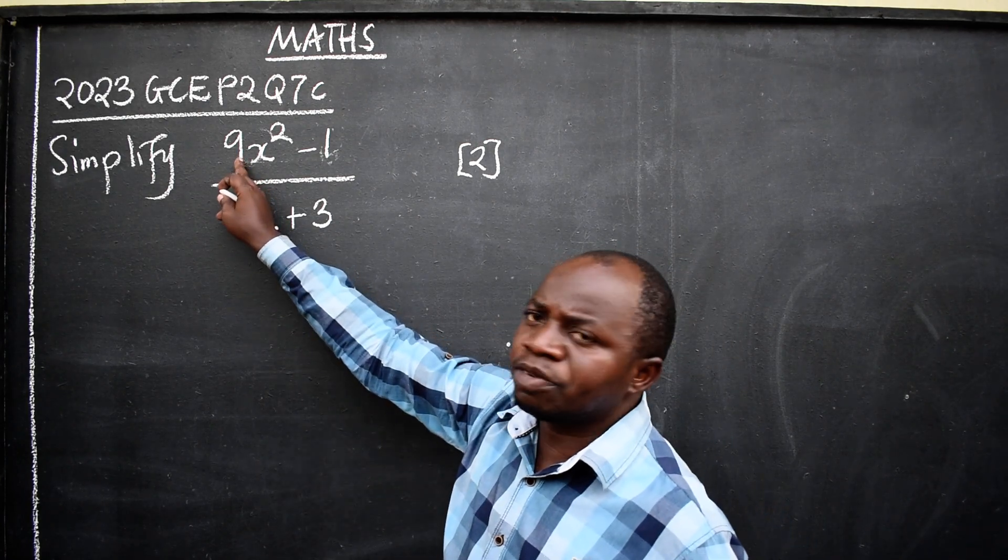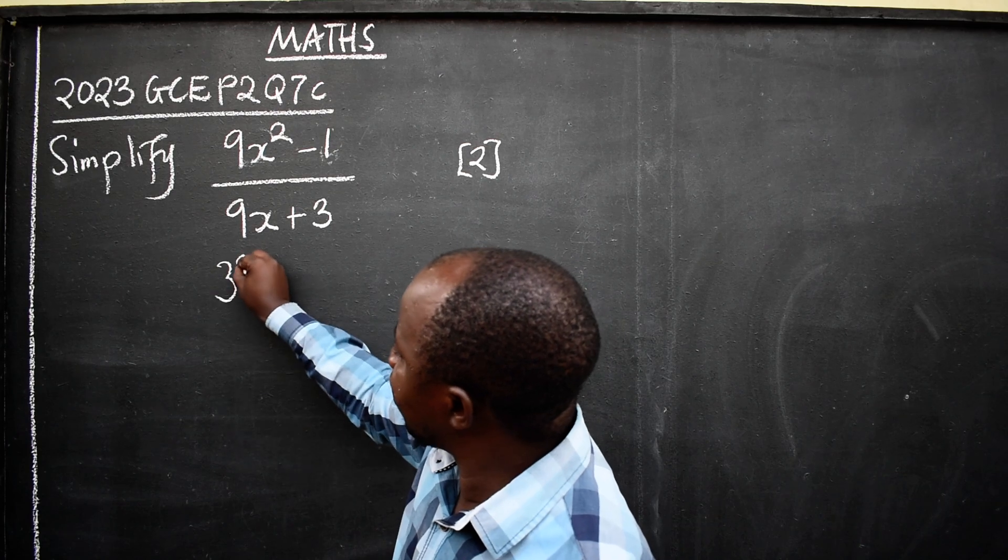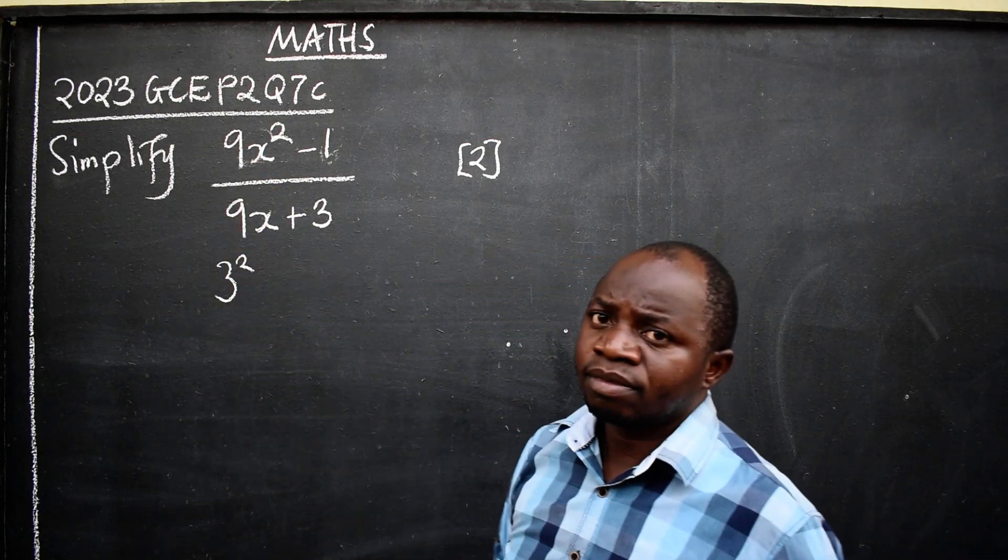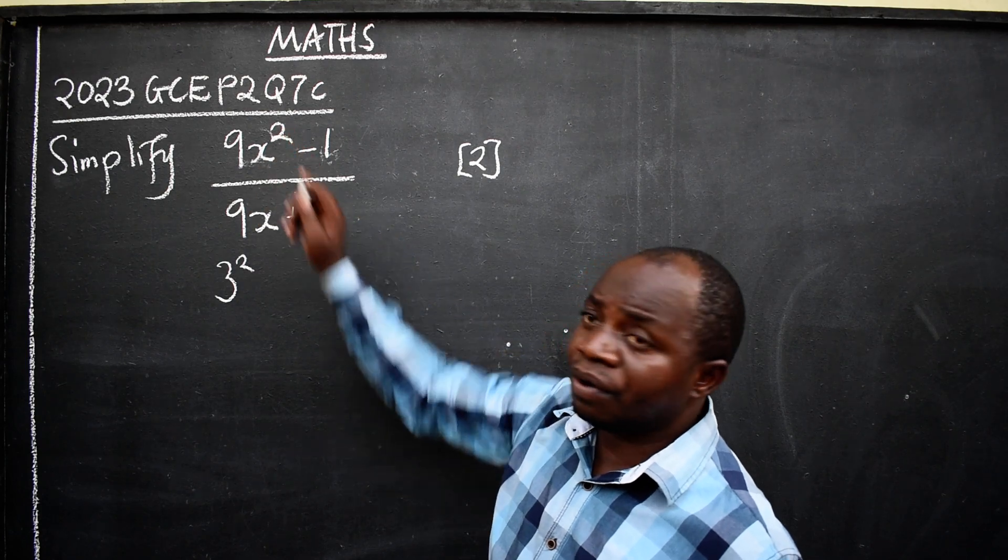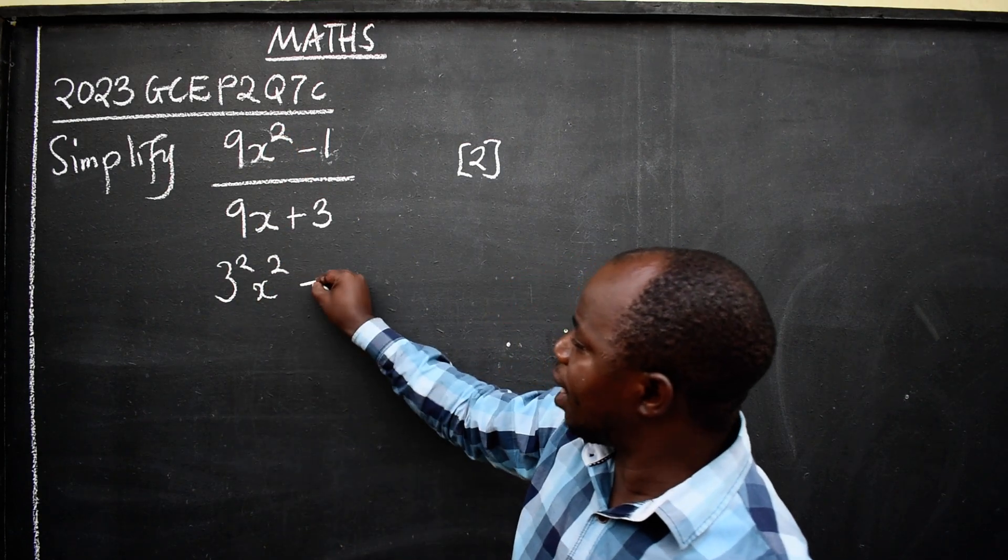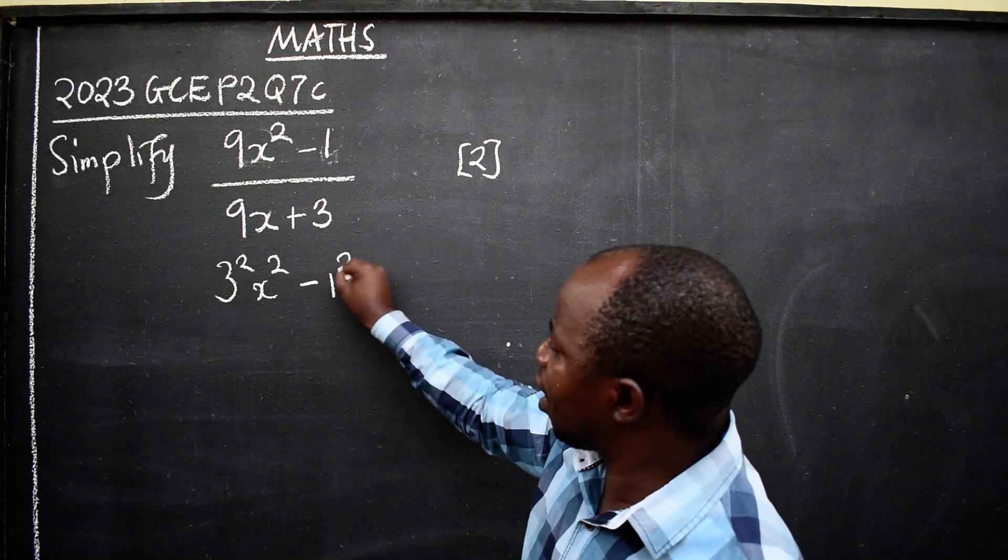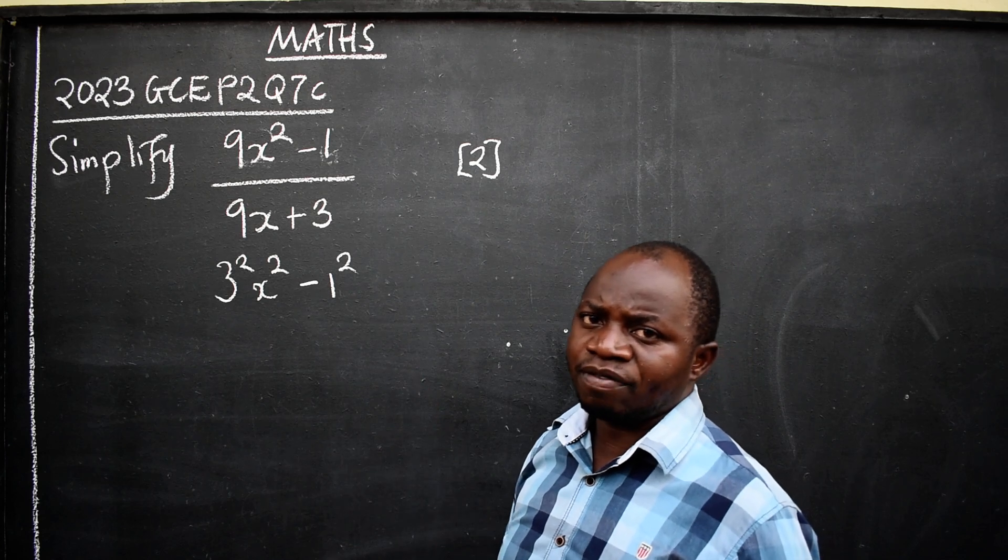How can you express 9 in square form? 3 to the power 2. That is 9. What about x? Already in square form. What about x squared minus 1? 1 squared. Everything is in square form.